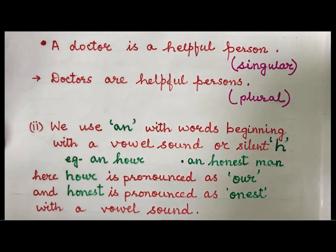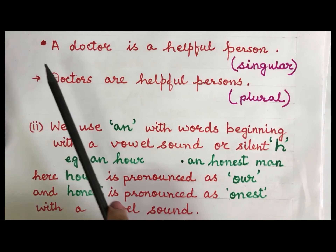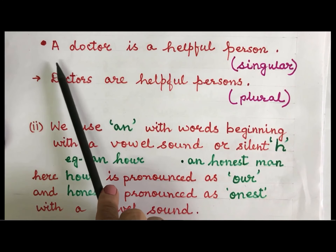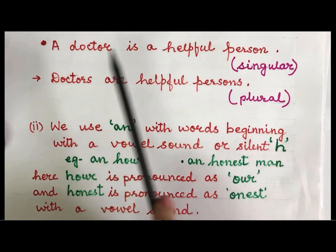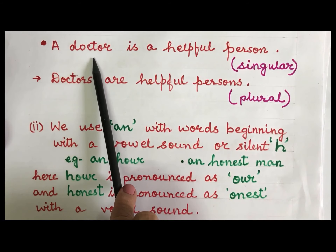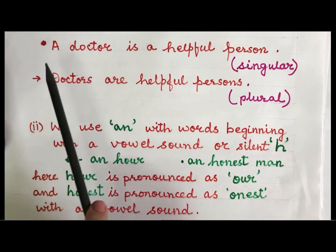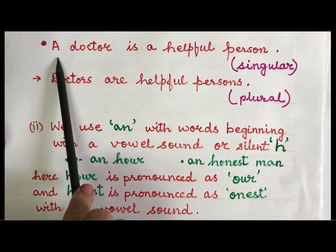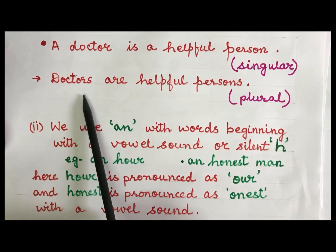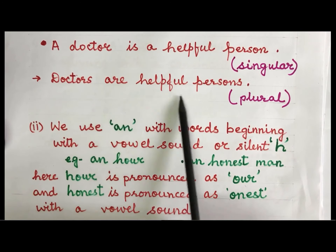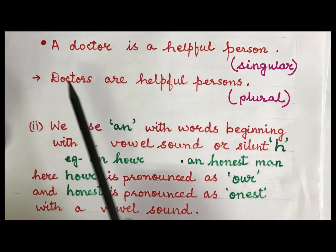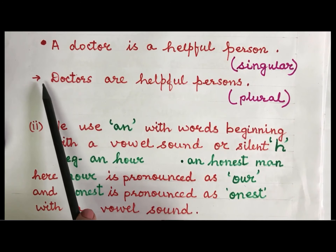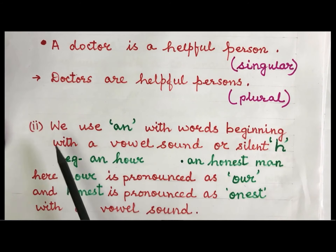One more example: a doctor is a helpful person — doctor is singular so we have written a here. Doctors are helpful persons — doctors is plural so we have dropped the article before doctors.